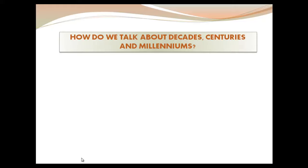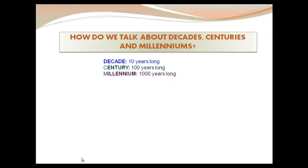We can group years into different groups. The most common are: a decade, which is 10 years long; a century, which is 100 years; a millennium, which is 1000 years; and we also have era or age. An era or age is a group of years that is not a fixed length — it depends on the era. For example: the Ice Age, the Middle Ages, or the contemporary age. Depending on the era, it could be longer or shorter.